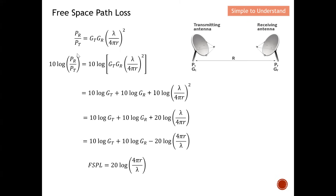I separate the equation into different terms: 10 log Gt, 10 log Gr, and 20 log of lambda over 4 pi r. The squared exponent shifts down, making it 20. I haven't done any advanced mathematics — just simplifying. When we talk about loss, this is a minus term. The gain of the transmitter and receiver antenna don't contribute to the path loss itself, so those terms are excluded from the free space path loss equation.